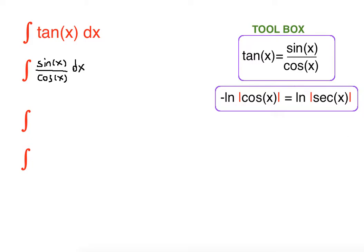Now we're going to do u-substitution. Our u is cosine x. The derivative of cosine x is negative sine x dx.